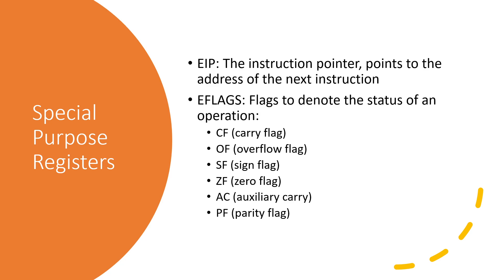Finally, we have EFLAGS, which is the register that denotes the status of an operation. It can tell us different things that happened during an operation. CF tells us if an operation had a carry, OF tells us if an operation had an overflow, SF tells us if a result was negative or positive, and ZF tells us if the result is zero. There are many other EFLAGS that exist, and we'll introduce these as they're seen throughout these videos.